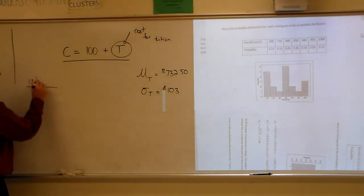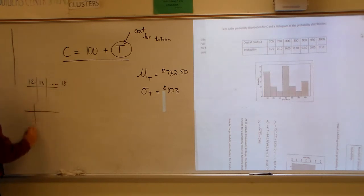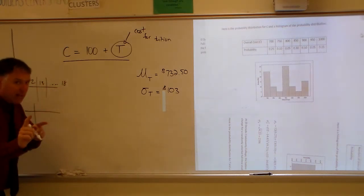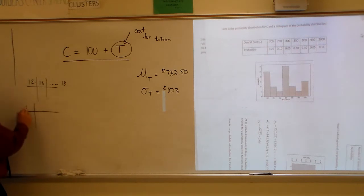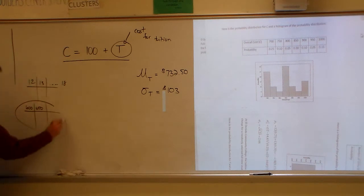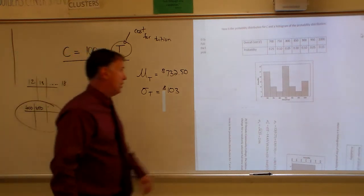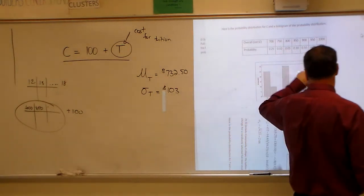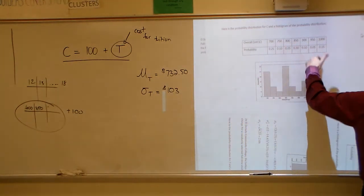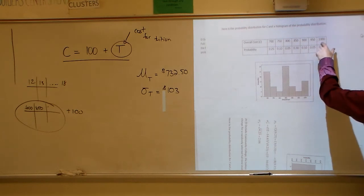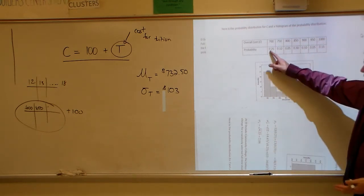And then they took that chart and they multiplied it times 50, so they had 600 and then it was 650 and so on. And now they're taking that chart and they're adding 100 to all of the values. So now it's 700 and 750 and 800 and 850 and 900 and 950 and 1,000. The probabilities remain the same.